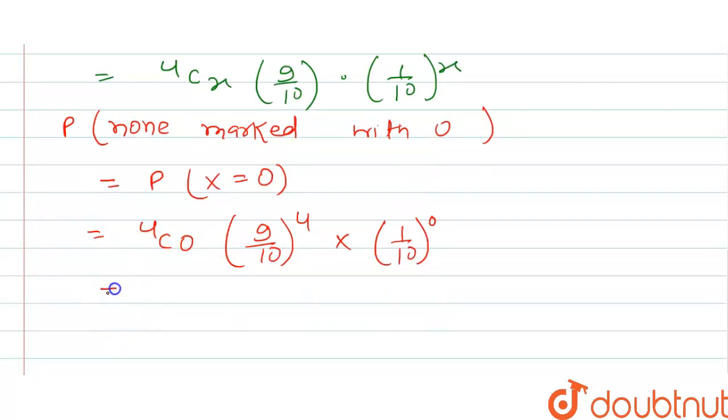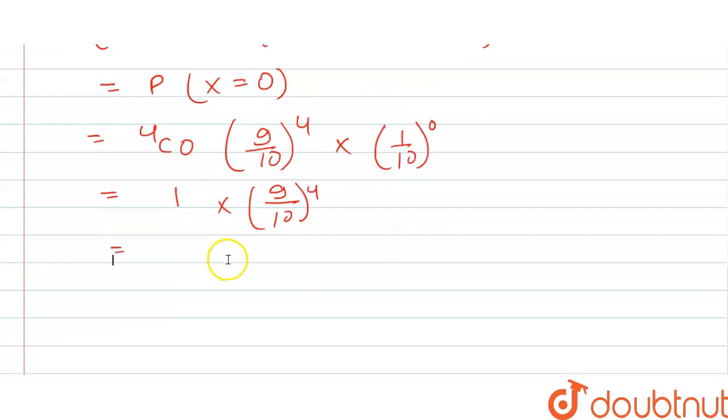The value of 4C0 will be 1, 10 to the power 4. Then the required probability will be 9 by 10 to the power 4.